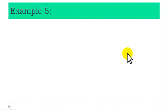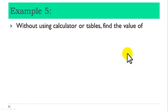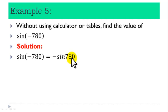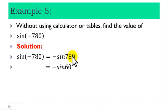Example 5: Without using a calculator or tables, find the value of sine of minus 780 degrees. Solution: We know that sine of minus theta equals minus sine theta, so sine of minus 780 equals minus sine 780. But 780 is greater than 360, so the basic angle of 780 is 60 degrees — dividing 780 by 360 gives 2 remainder 60. So minus sine 780 equals minus sine 60, which equals minus root 3 over 2.